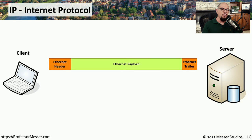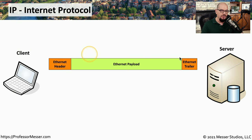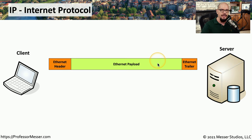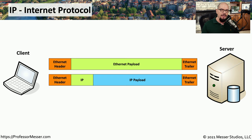If we look at the way that IP operates, we start with the very basics of an ethernet frame. With an ethernet frame communicating between a client and a server, we have an ethernet header and an ethernet trailer. Inside of that header and trailer, we put the entire payload sent across the ethernet network. The most common form of communication inside of that ethernet payload is IP, or the internet protocol.